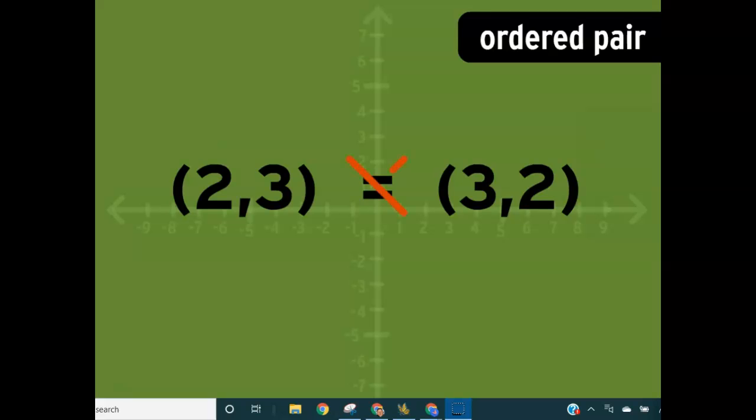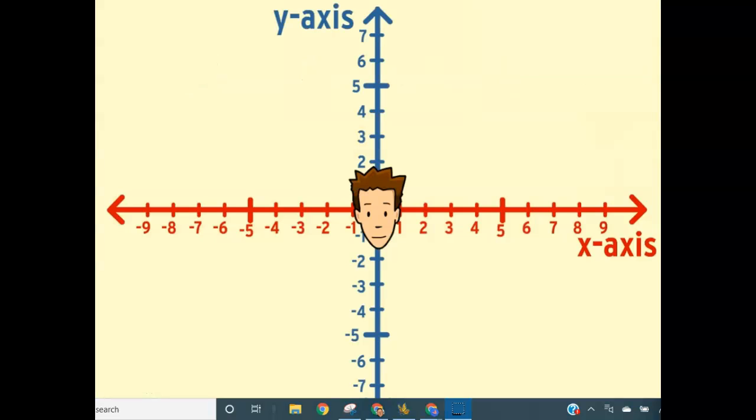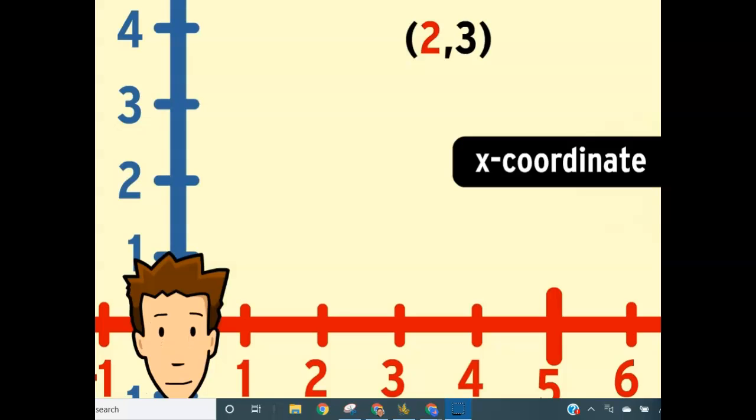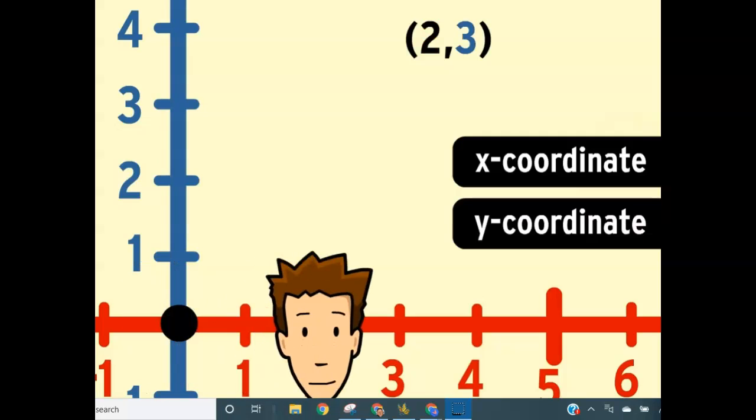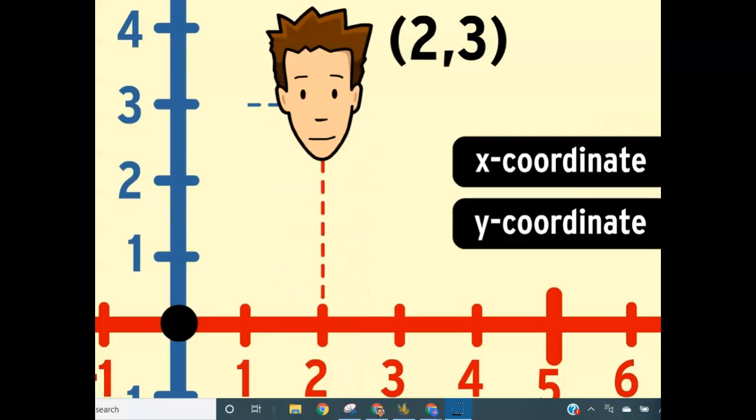For instance, two comma three is different from three comma two. The first number tells you the address of a point on the x-axis while the second number tells you the address of a point on the y-axis. So to find the point described by the ordered pair two comma three, you'd start by looking at the first number, the x-coordinate. It tells you to go two units to the right. Next you look at the second number, the y-coordinate, which tells you to go three units up. Now I'm at the point two comma three.